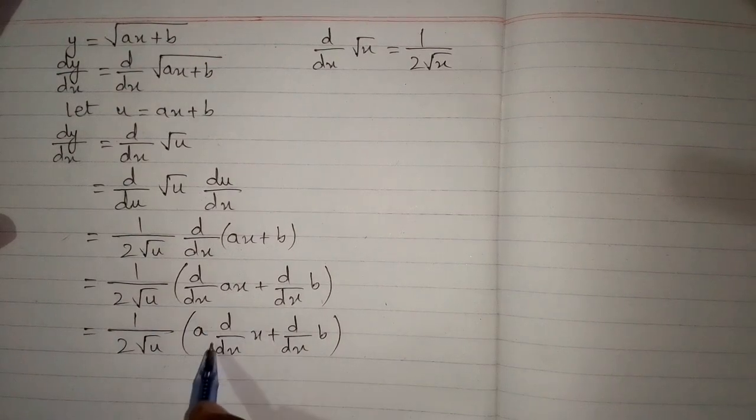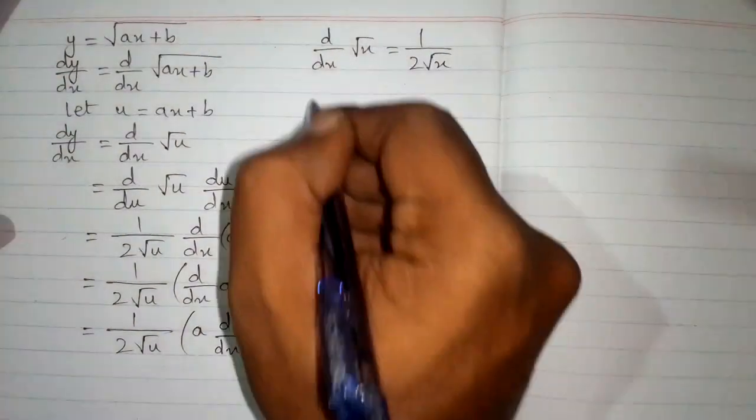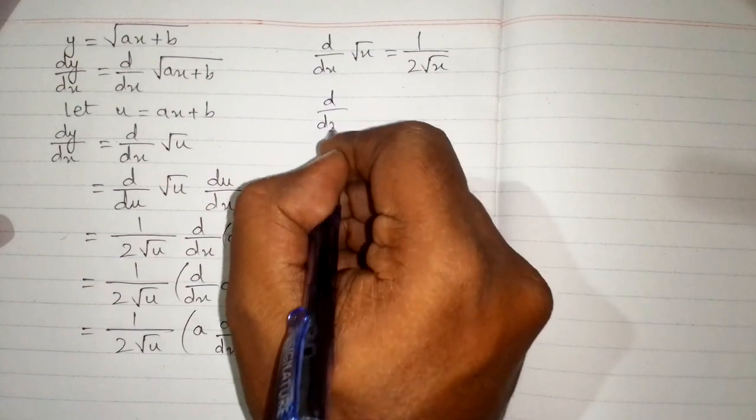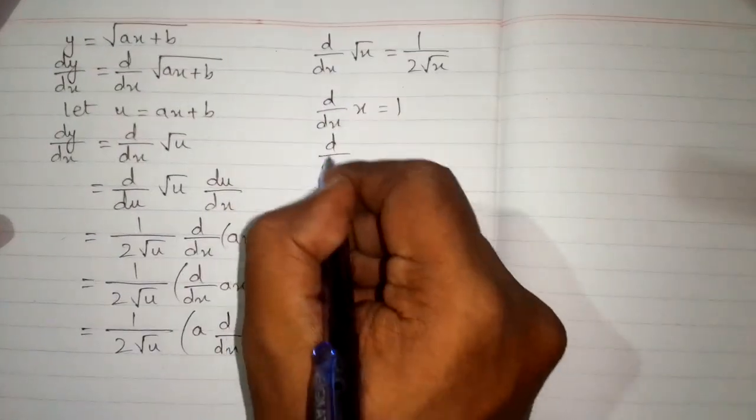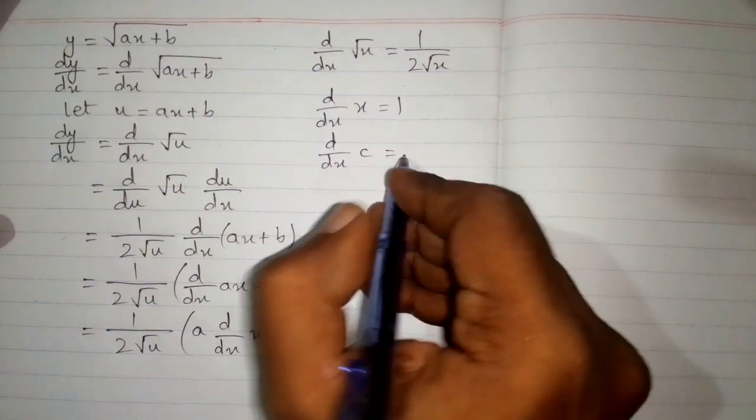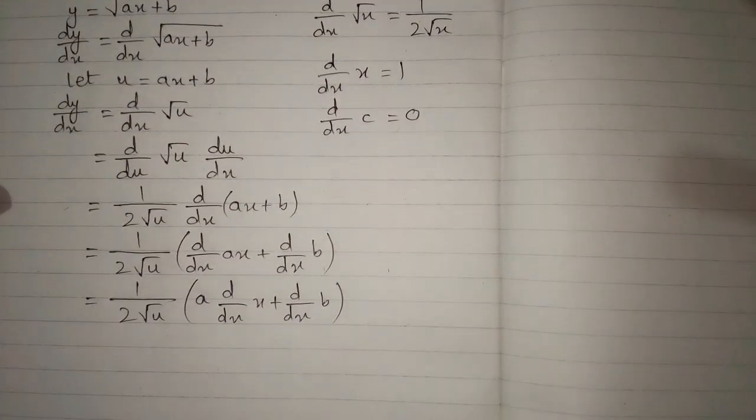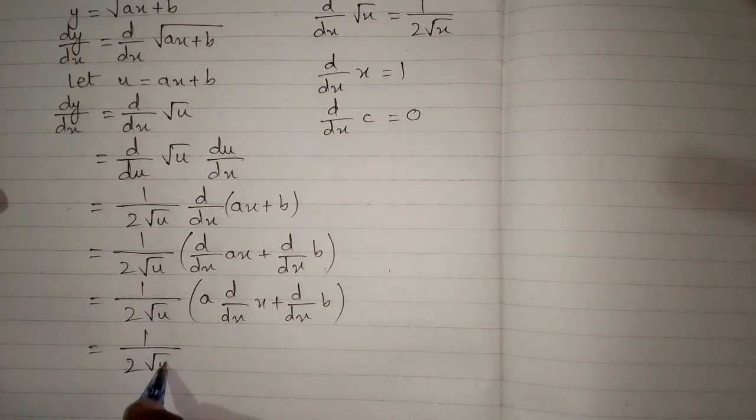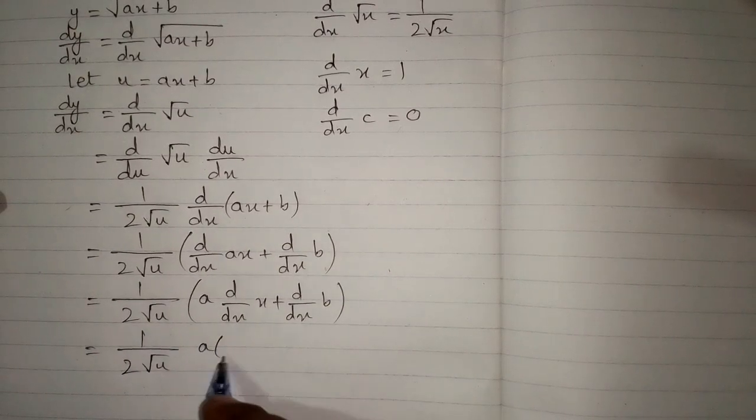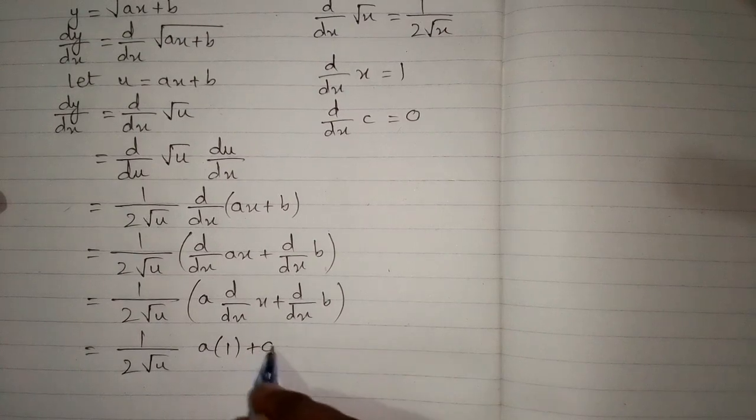So we can write a before dy by dx. Now we know that the derivative of x is 1 and the derivative of any constant is 0. So here the derivative of x is 1 and the derivative of constant is 0.